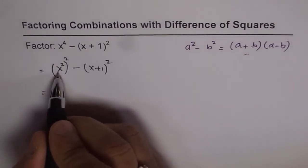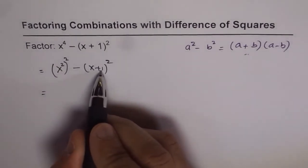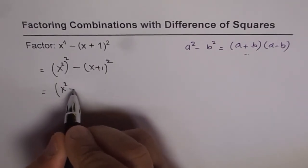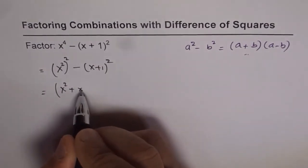So here a is x square and b is x plus 1. So a plus b will be x square plus x plus 1.